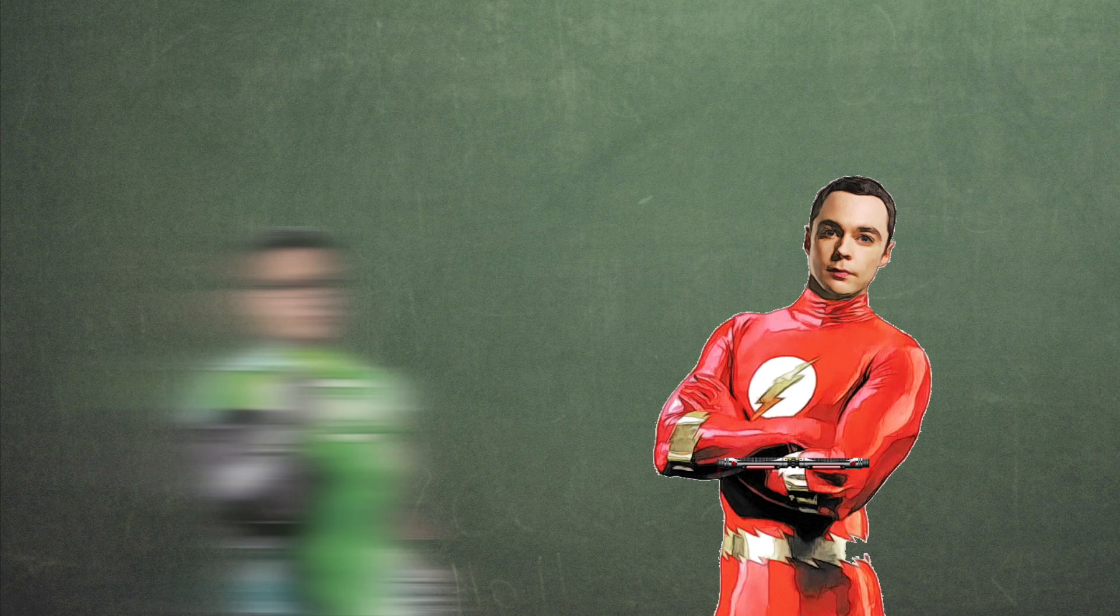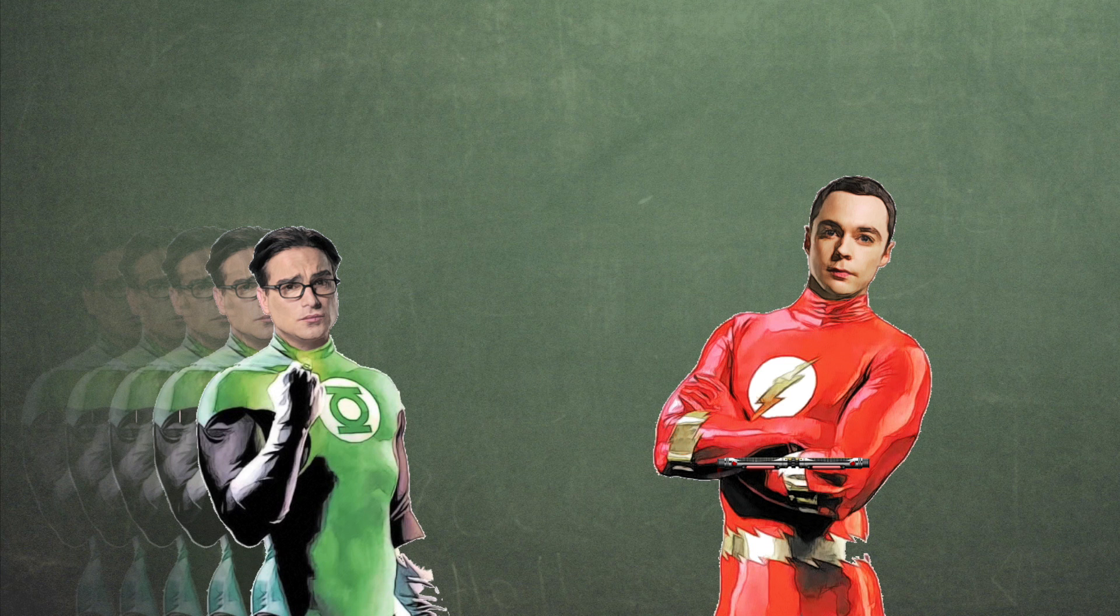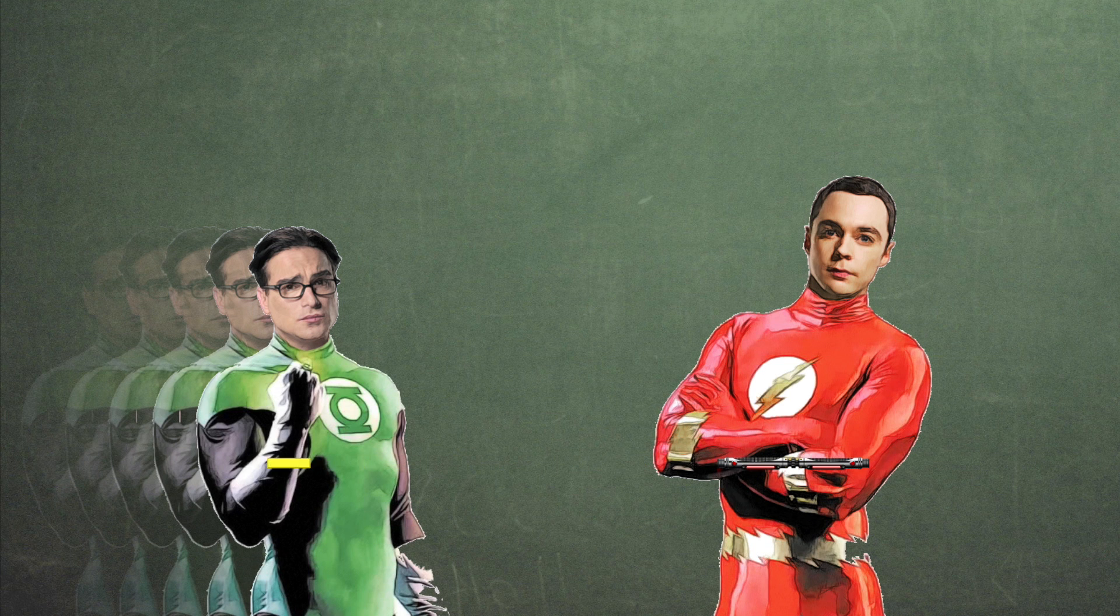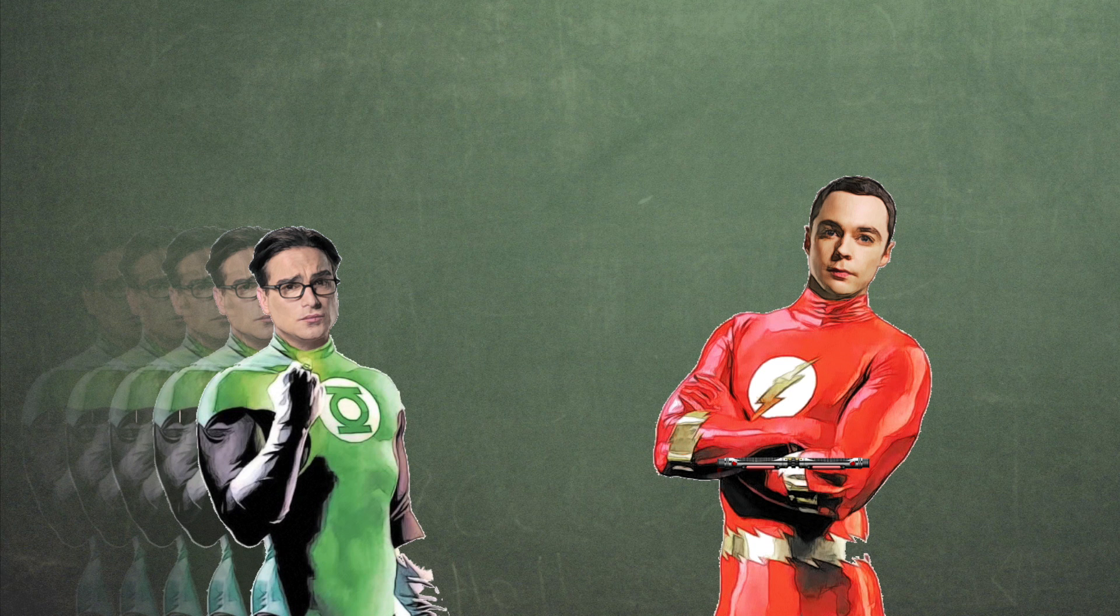Let's now add Leonard to the picture. Imagine he is first in the same initial frame as Sheldon. Then Leonard runs towards Sheldon, reaches speed V, then sees Sheldon turning on his lightsaber, and then stops in front of Sheldon.